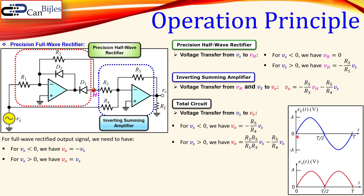For VS greater than zero, the output must be exactly equal to VS. These two conditions we need to meet in order to get a full wave rectifier. Looking at the transfer function expression for Vout in terms of VS, we can set R5 over R4 equal to one, and then make the overall expression equal to VS for the positive cycle condition.